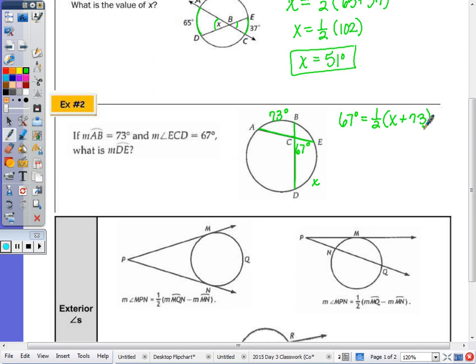Double both sides. Two times 67 is 134, equals X plus 73. Subtract the 73, and X equals 61. So the measure of arc DE is equal to 61 degrees.